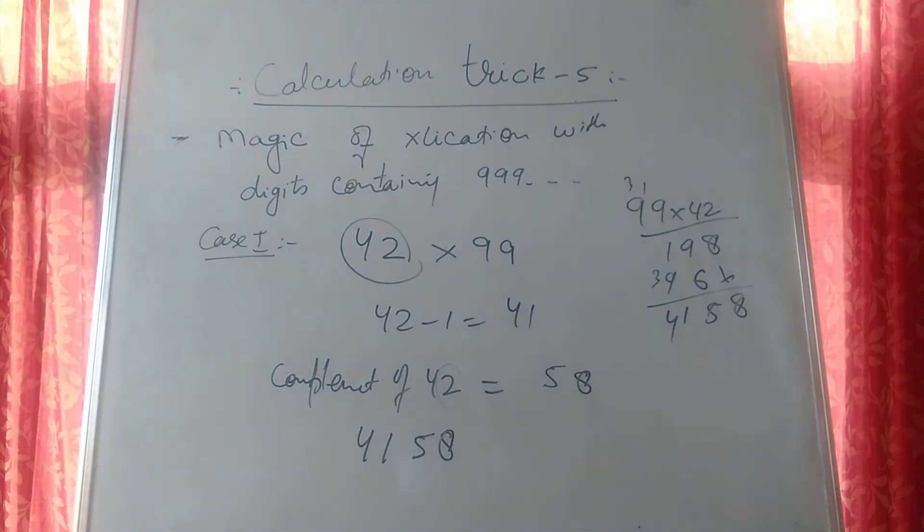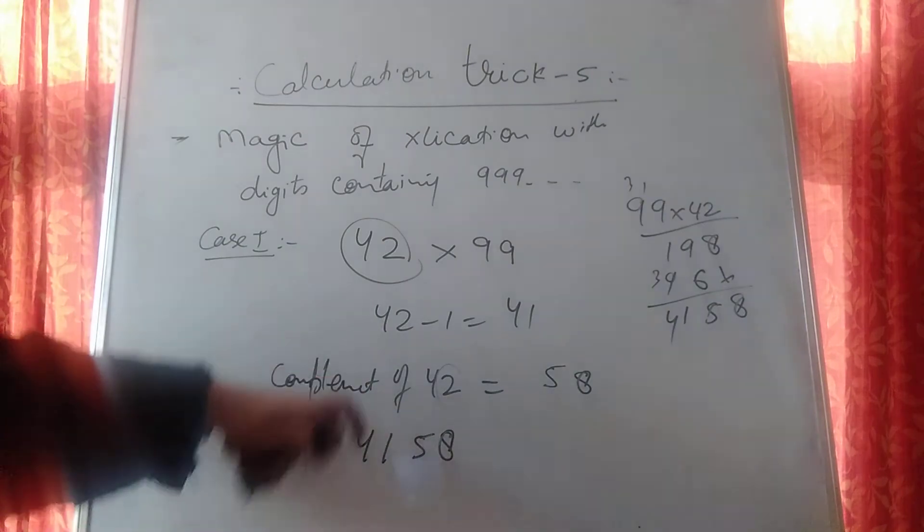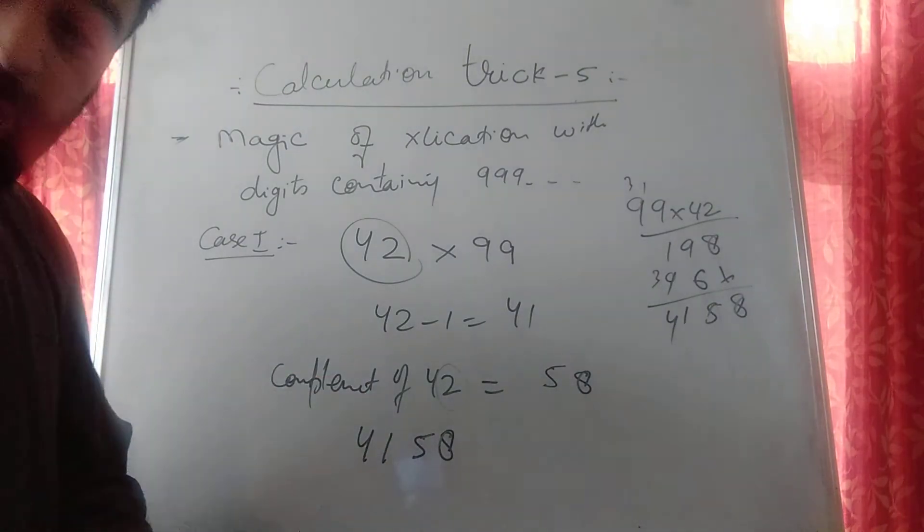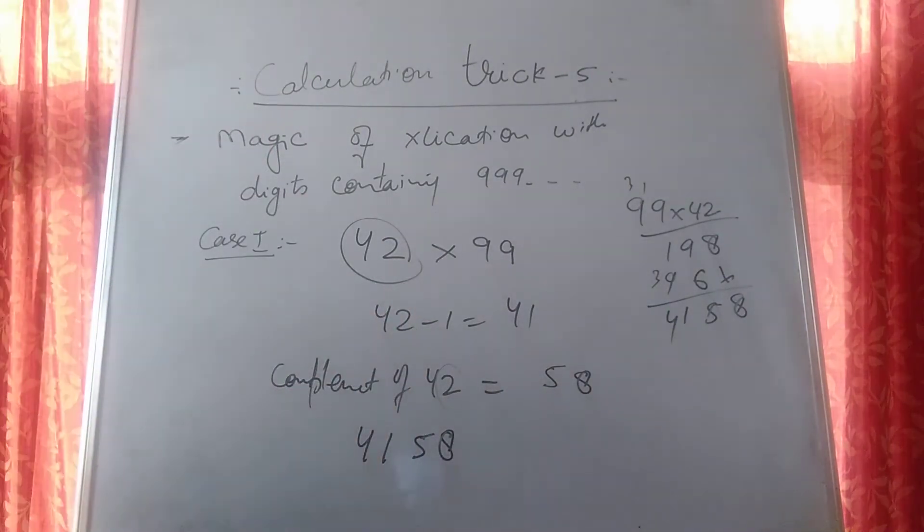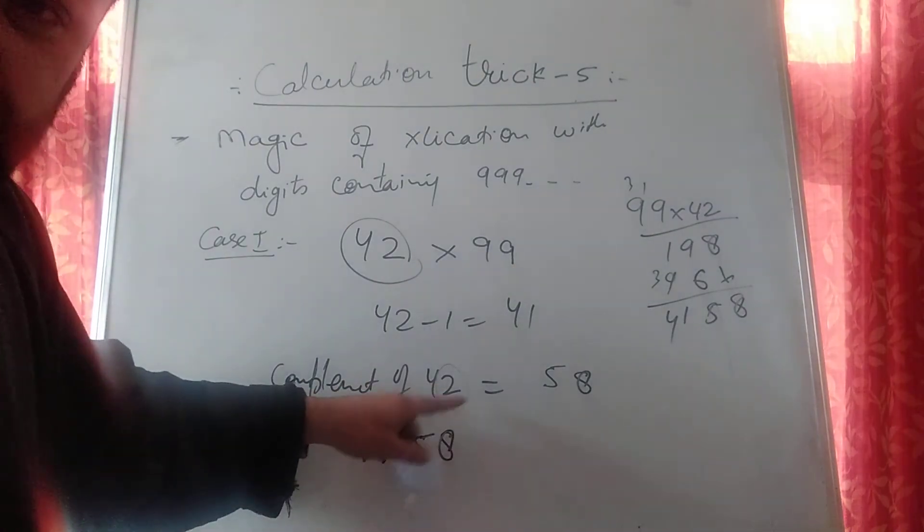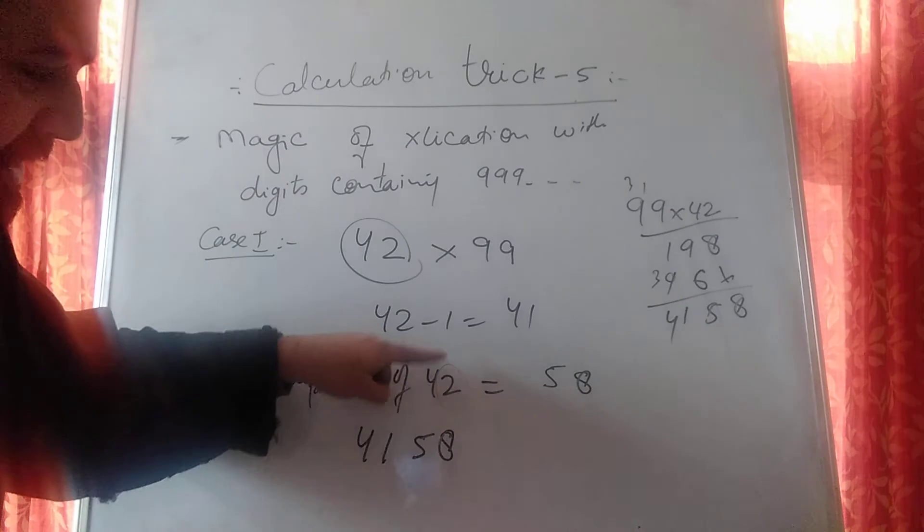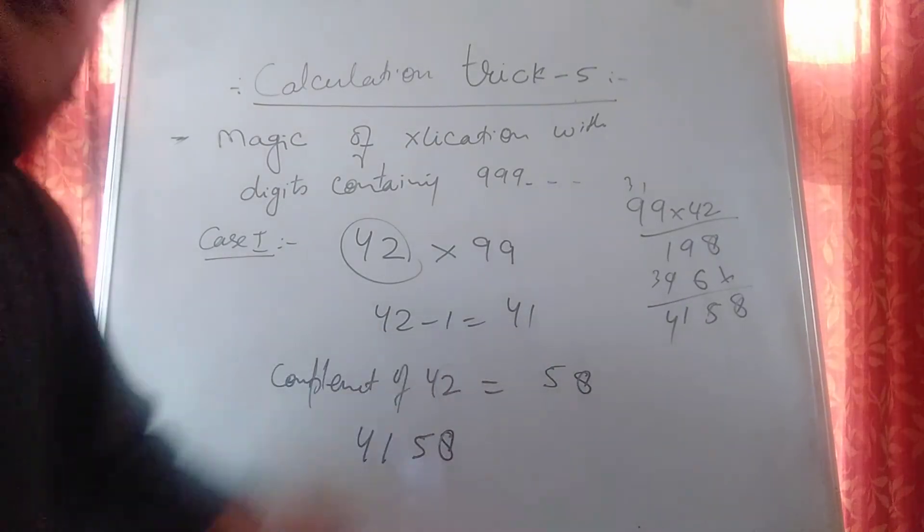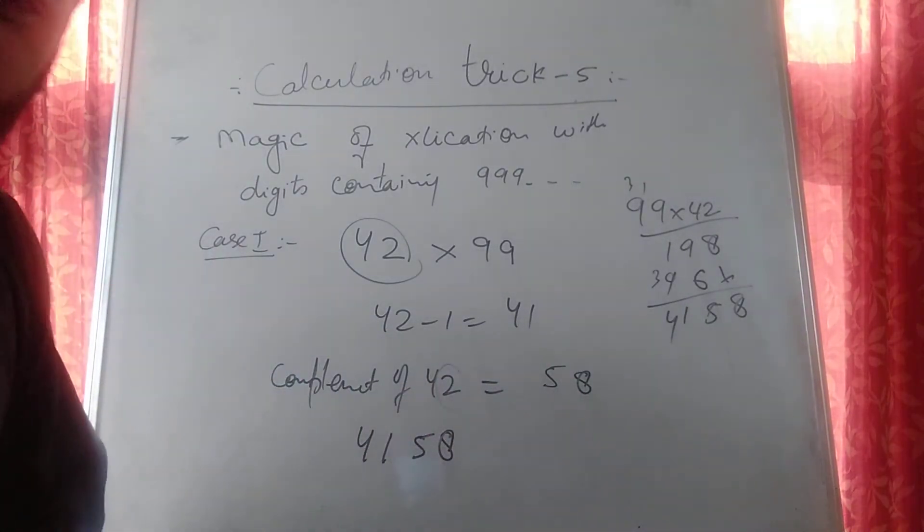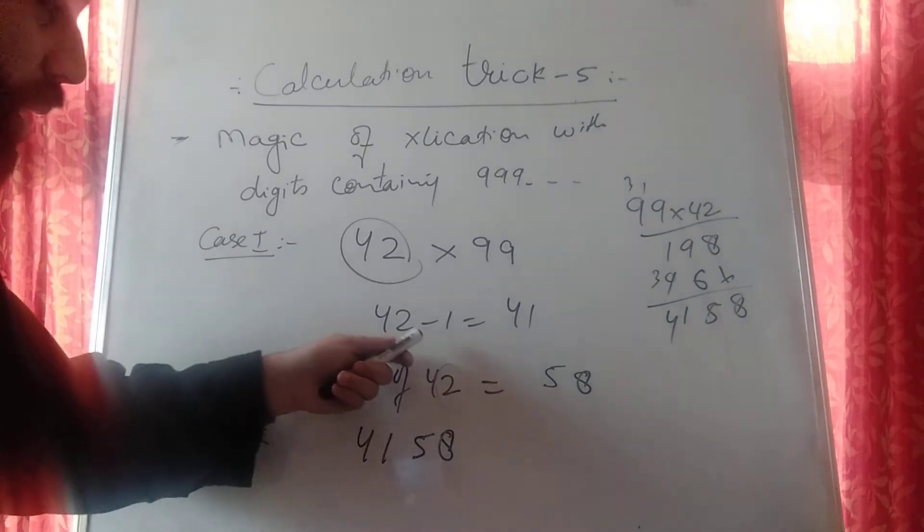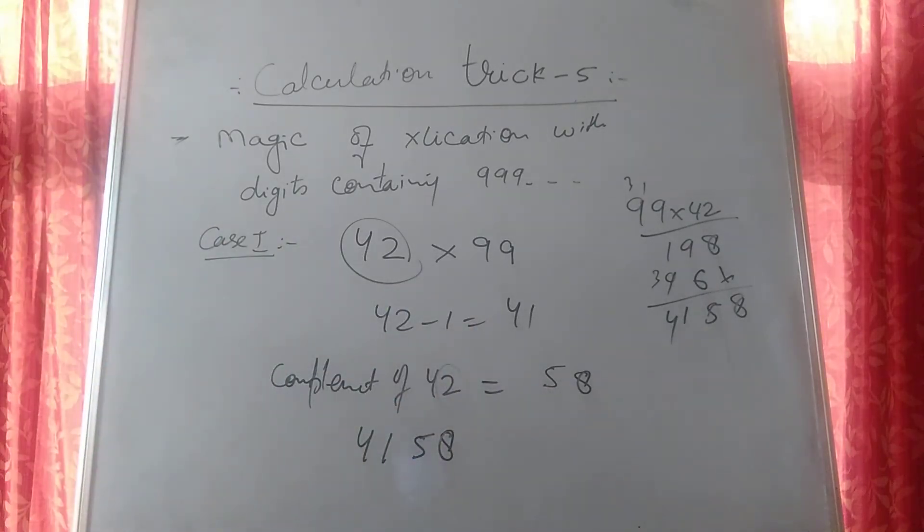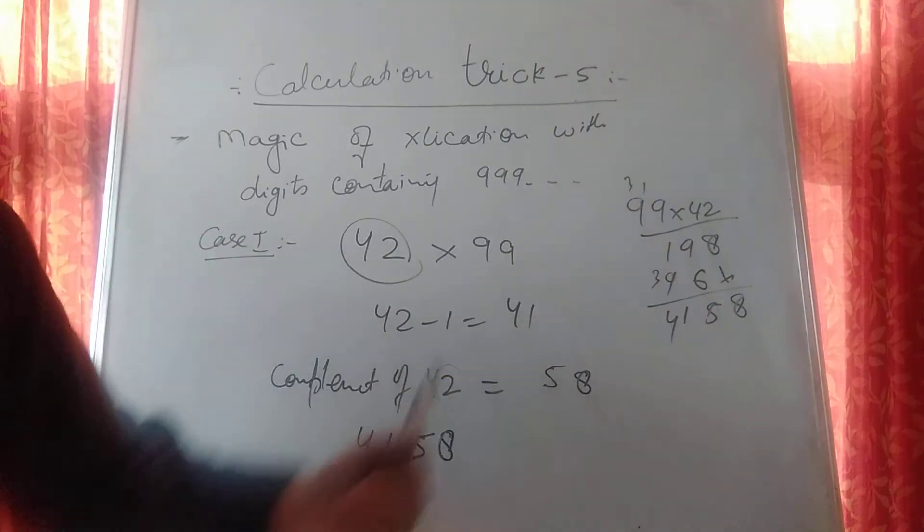What to do? Subtract this with 1 and find its complement. And how to find complement of any number? The last digit, the digit at units place, is subtracted from 10. So what is 10 minus 2? 8. And the rest of digits is to be subtracted with 9. What is 9 minus 4? 5. So the answer is 4158.